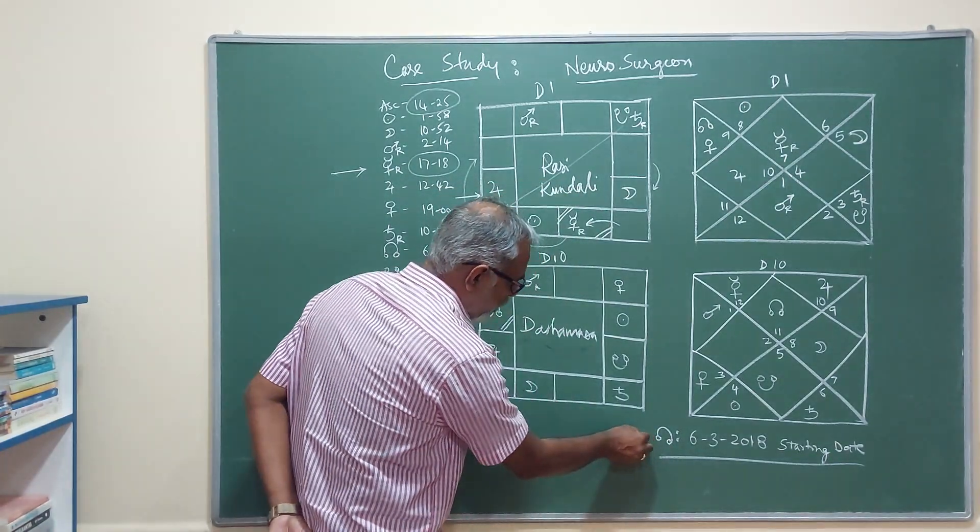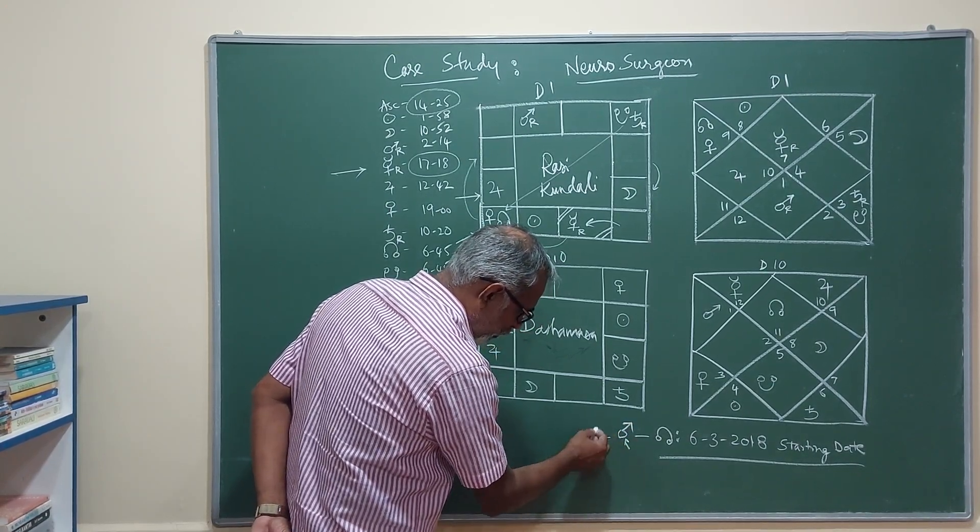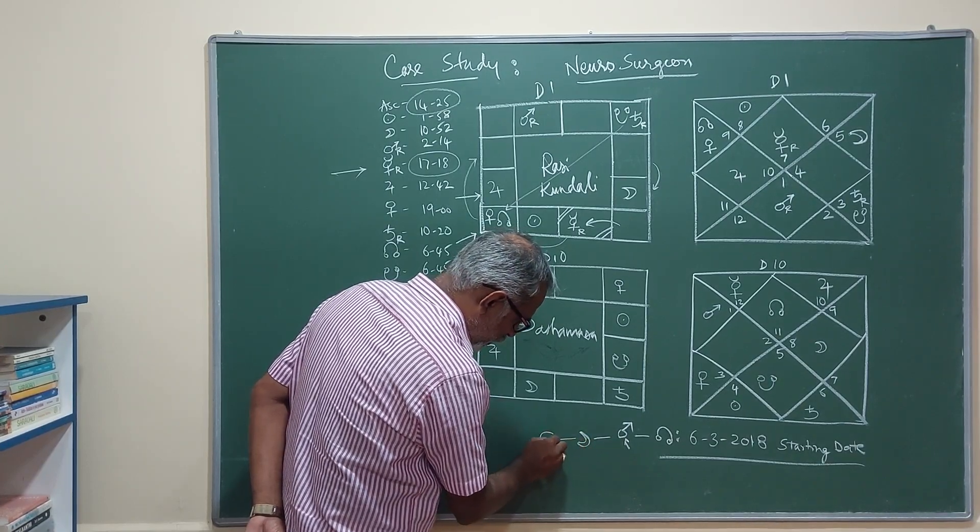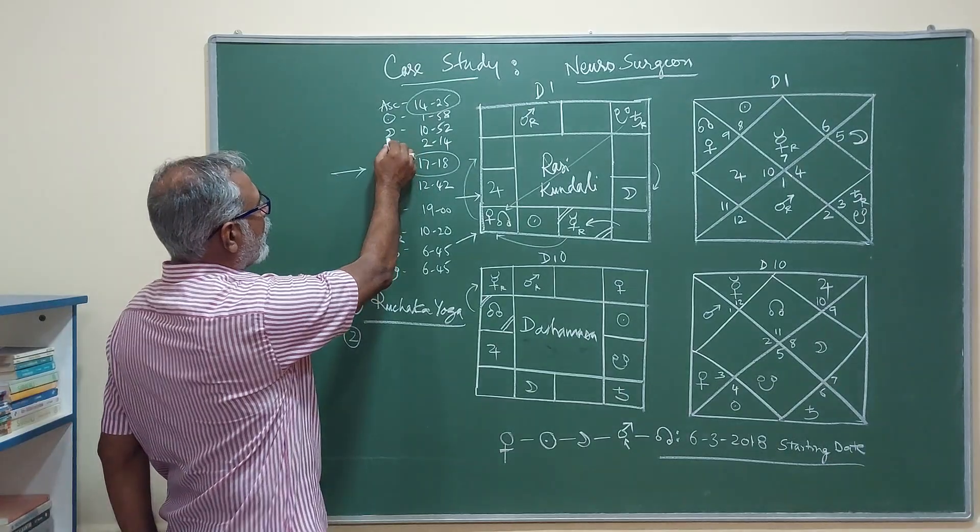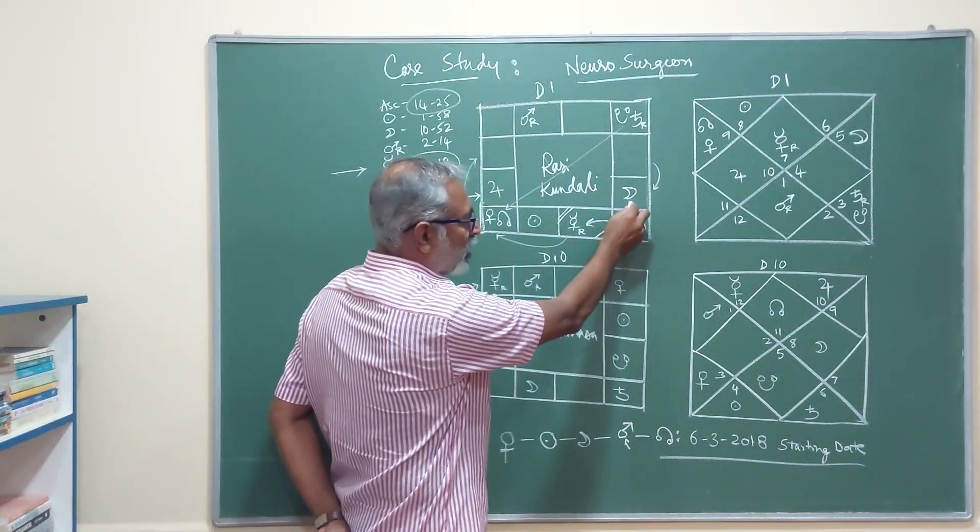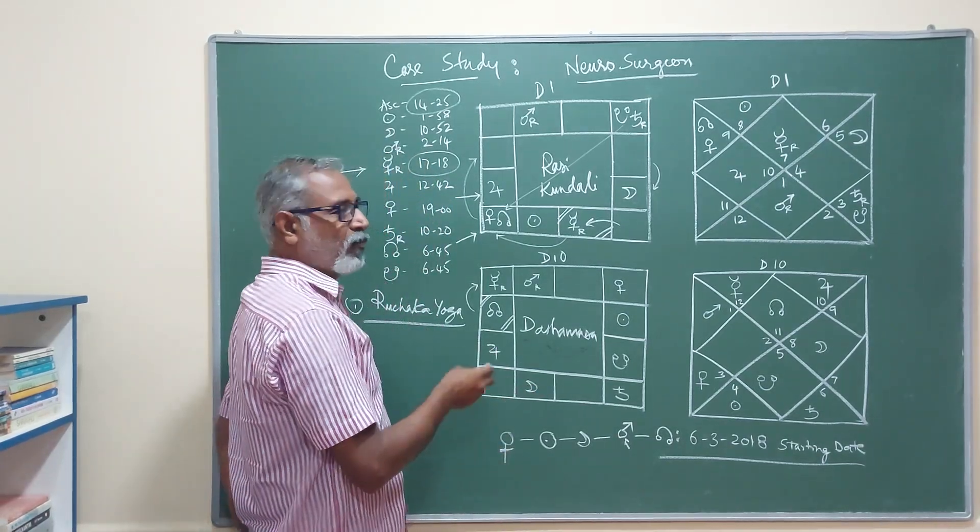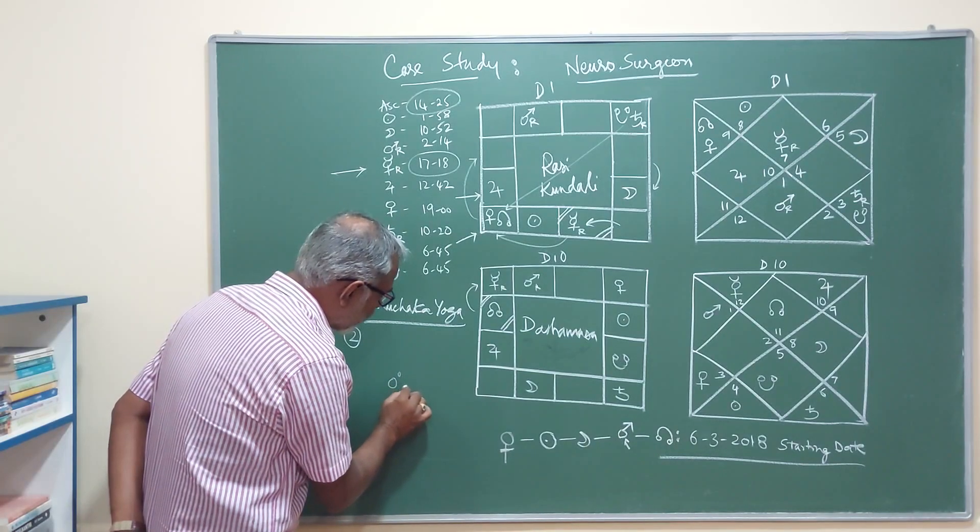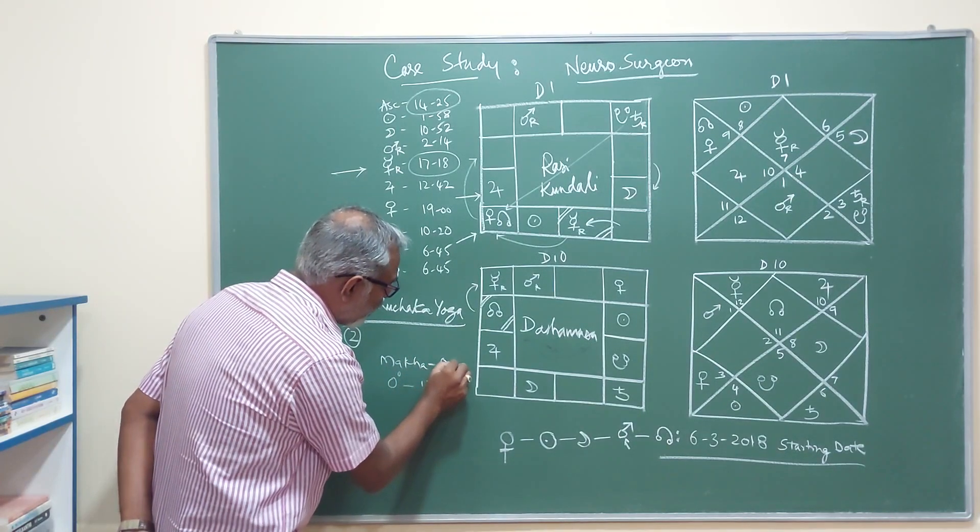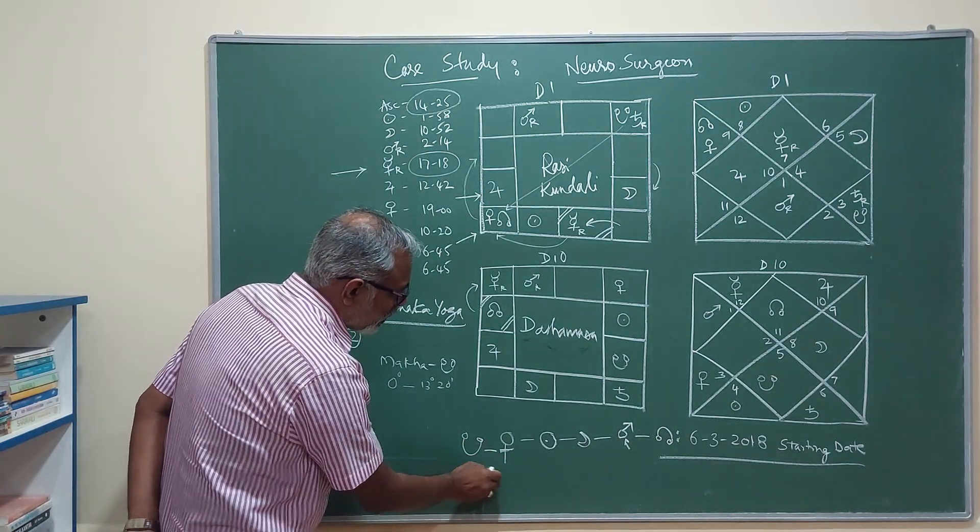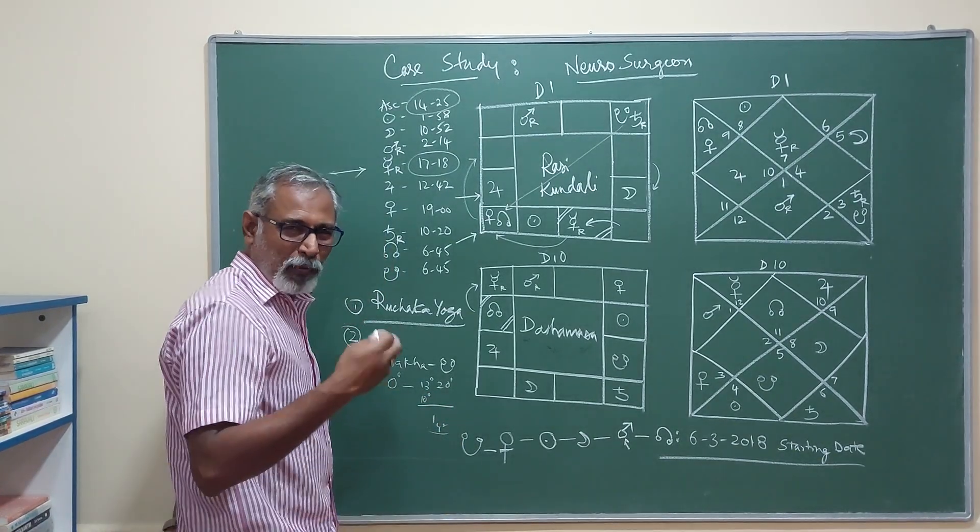He has gone through a lot of dashas. Before the Rahu dasha, he would have gone through the dasha of Mars, which was retro. Then before that moon, before that sun, and before that Venus. Chandra is at 10 degrees 52 minutes. It is just on the edge of the Makha nakshatra of Simha rashi. Simha rashi Makha nakshatra is from 0 degrees to 13 degrees 20 minutes. That is Makha, which is ruled by Ketu. He is born in the Ketu nakshatra.